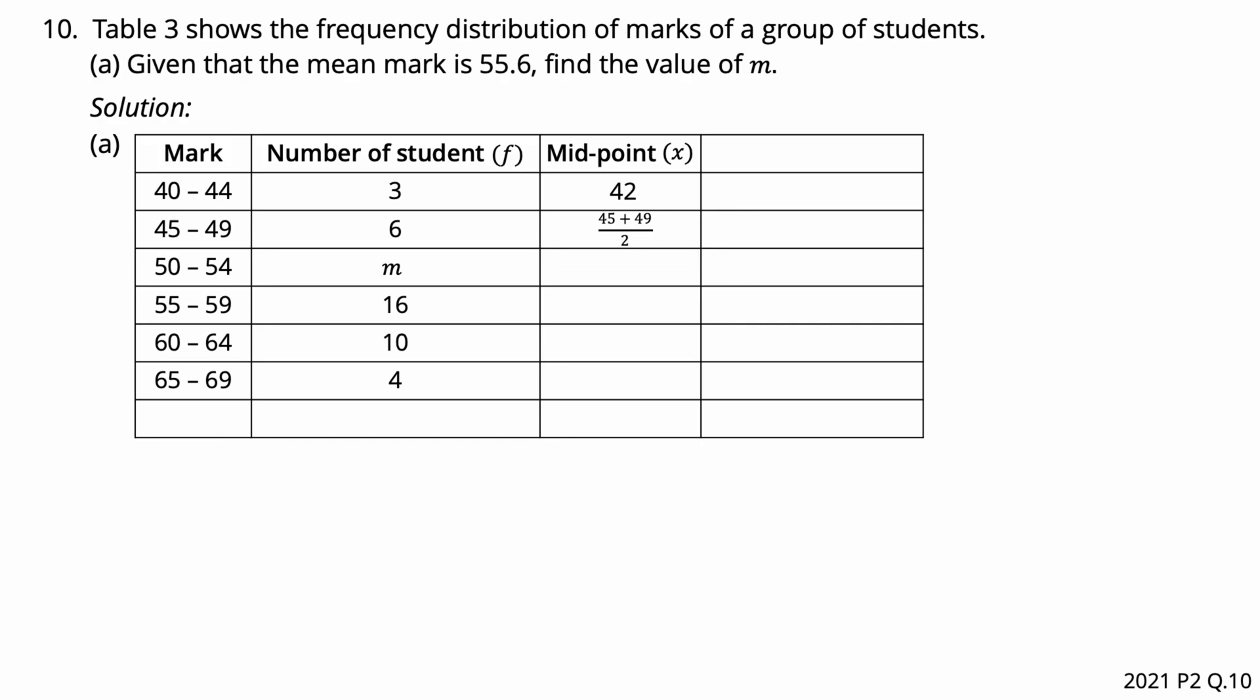Given that the mean mark is 55.6, find the value of m. First, we need to find the midpoint for each class interval. The answer is 42. 45 plus 49 divided by 2 is equal to 47. Then, follow the pattern. We can see the next midpoint is going to be 52, 57, 62, and 67. Next, we are going to multiply the frequency by the midpoint. This is going to be F times X.